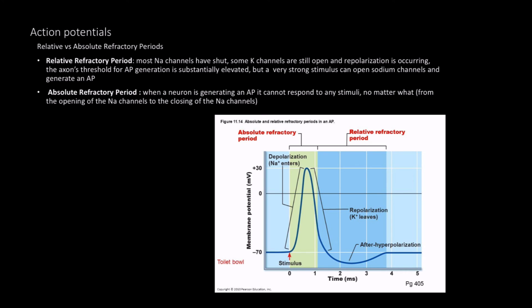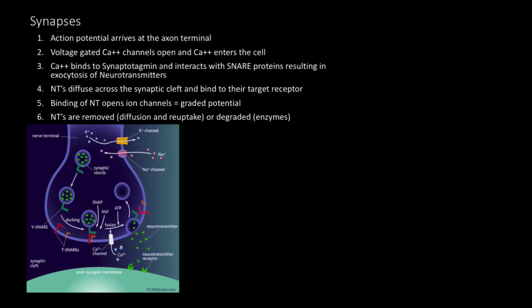Having action potentials fire repeatedly during the relative refractory period can actually be very bad — for example, what happens when muscles are tased.